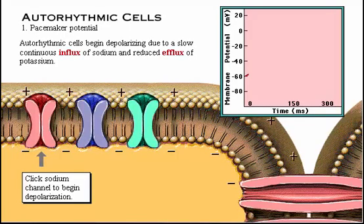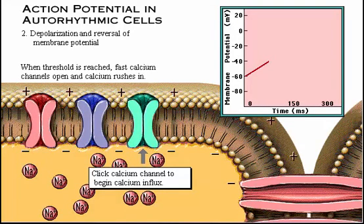Auto-rhythmic cells begin depolarizing due to a slow, continuous influx of sodium and reduced efflux of potassium. Click the sodium channel to begin this slow, spontaneous depolarization process. When the membrane potential gets to negative 40 millivolts, it has reached the threshold for initiating an action potential. Fast calcium channels open, and positively charged calcium ions rush into the cell. Click the calcium channel to begin calcium influx.